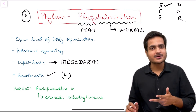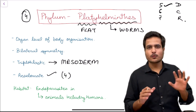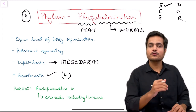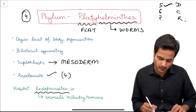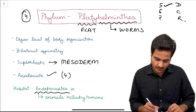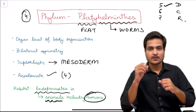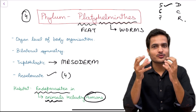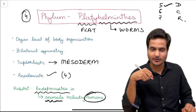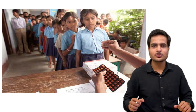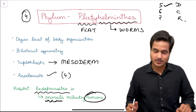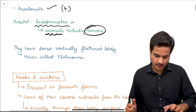Regarding habitat: the first, second, and third phyla had aquatic habitats — the first was aquatic, second mostly marine, third exclusively marine. But the fourth phylum, Platyhelminthes, are actually endoparasites — 'endo' means inside — meaning they live as parasites inside the body of their host, including animals and humans. These are the worms in our intestines, targeted by deworming medicines like albendazole, distributed in government schools to deworm children's intestines.